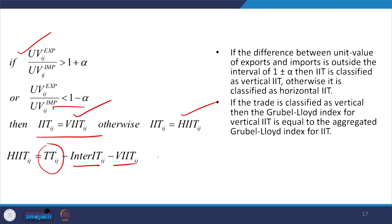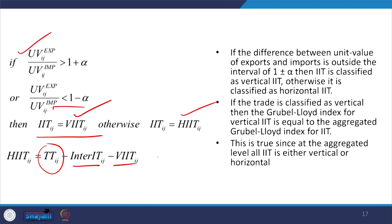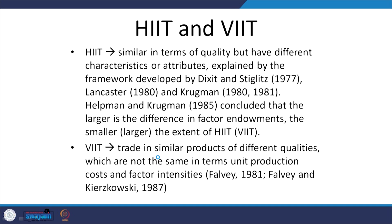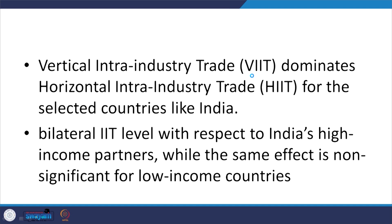If the trade is classified as vertical, then the GL index for vertical IIT equals the aggregate IIT as we already discussed. This is true since at the aggregate level IIT is either vertical or horizontal. There is a gamut of understanding related to HIIT and VIIT, emphasized in work by Stiglitz, Lancaster, and Krugman, as discussed in earlier lectures.